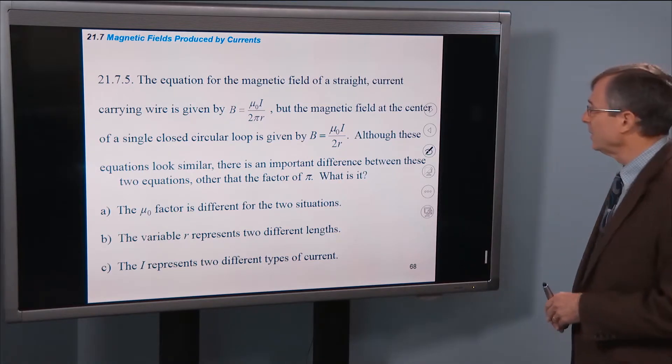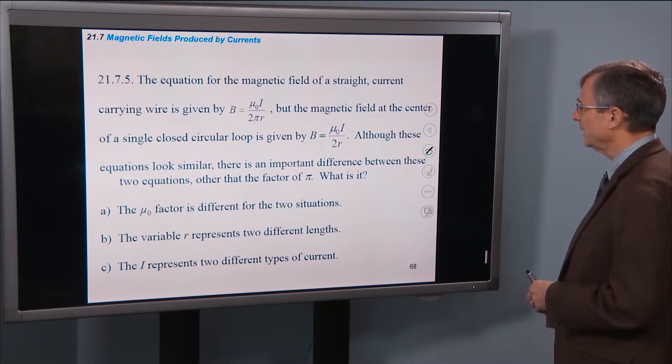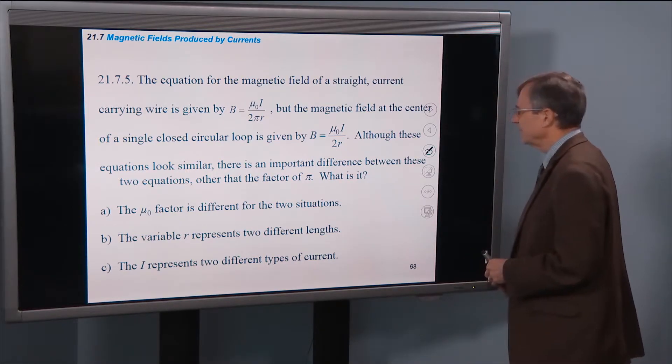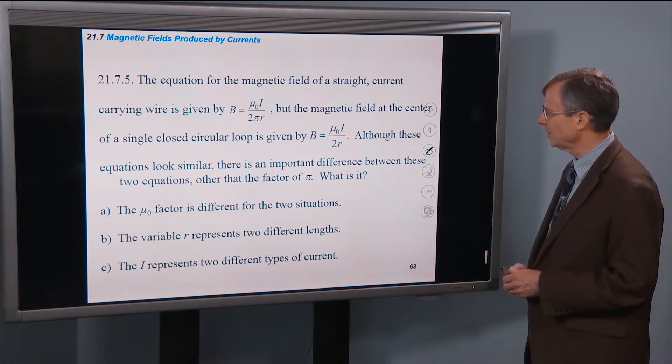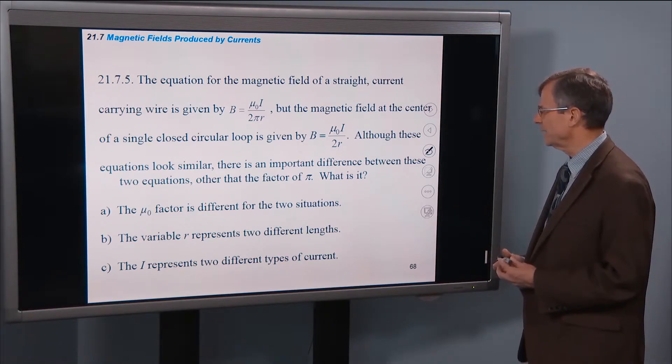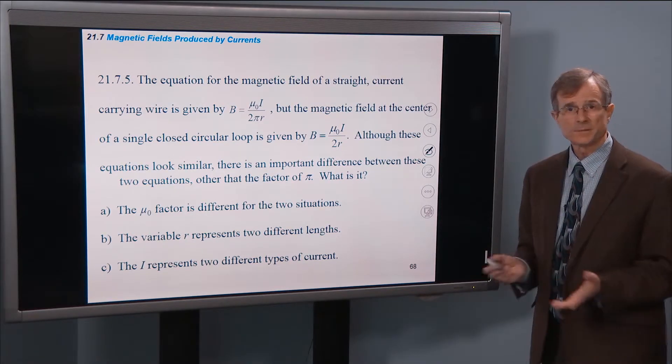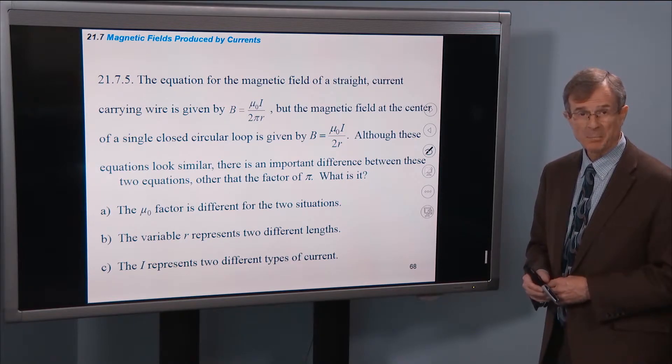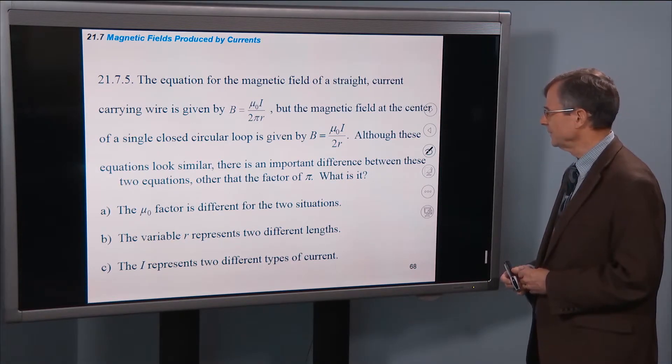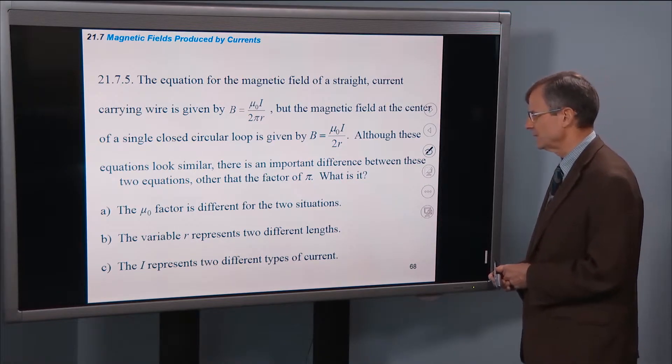Equation for magnetic field, the long straight current carrying wire is given by µ₀i over 2πr. But the magnetic field at the center of a single closed circular loop is given by µ₀i over 2r. What's the difference? Just that π. It looks similar. There's an important difference between these other than the factor of π. What is it?